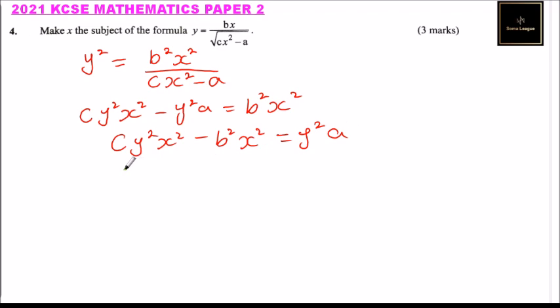We factor x squared to get x squared times cy squared minus b squared equals y squared a.